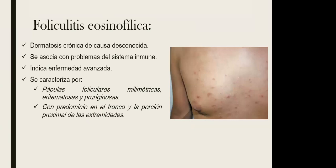La foliculitis eosinofílica, también llamada enfermedad de Ofuji, es una dermatosis crónica de causa desconocida con mecanismo idiopático. Se asocia con problemas del sistema inmune, sobre todo hipersensibilidad tipo 2. Indica una enfermedad avanzada, es decir, cuando se presenta ya quiere decir que el conteo de linfocitos ha disminuido. Se caracteriza por pápulas foliculares milimétricas, eritematosas y pruriginosas, y predomina en el tronco y la porción proximal de las extremidades.